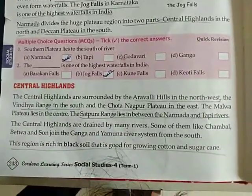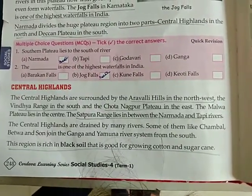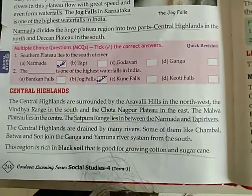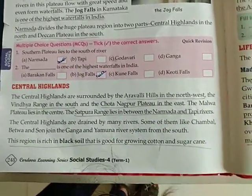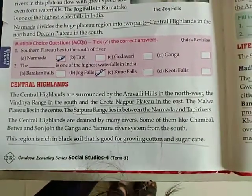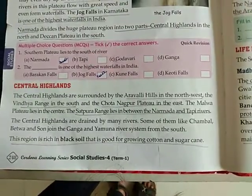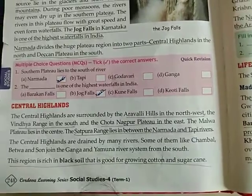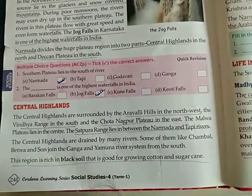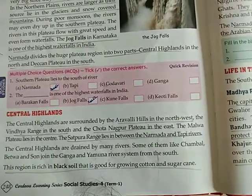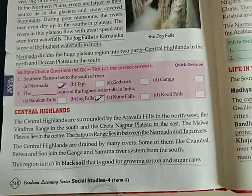Central Highlands are surrounded by the Aravali Hills in the northwest, the Vindhya range in the south, and the Chota Nagpur Plateau in the east. Jho central highlands hai, uske surrounding mein: Aravali Hills hai jo northwest mein hai, Vindhya range hai jo south mein hai, aur Chota Nagpur Plateau hai jo east mein hai. Aur jo Malwa Plateau hai, woh center mein lag karti hai.